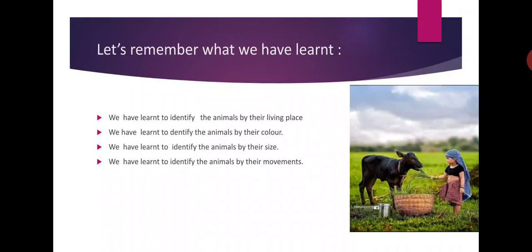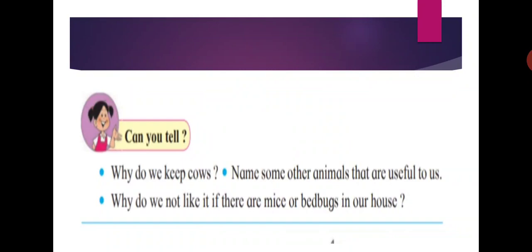Now let's learn about animals. Can you tell why we keep cows? Yes, you are correct — we keep cows to get milk. Name some other animals that are useful to us. You are all correct: cats, dogs, cows, and bullocks are useful animals to us.